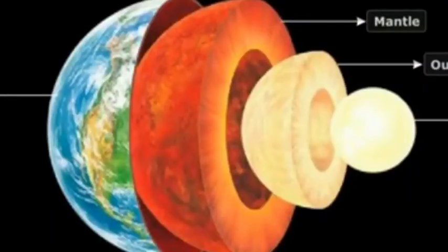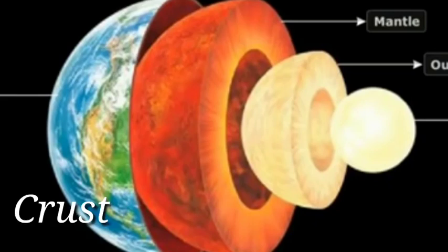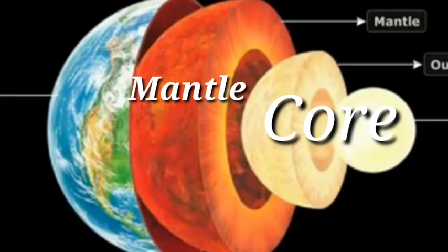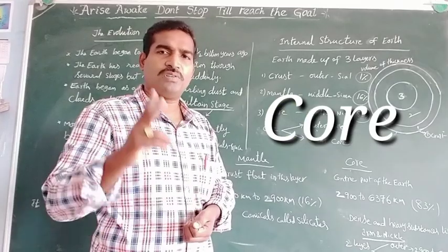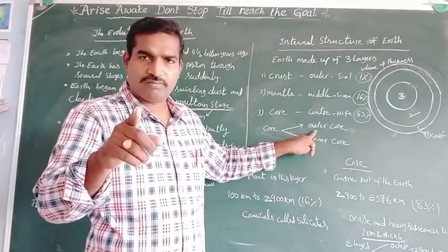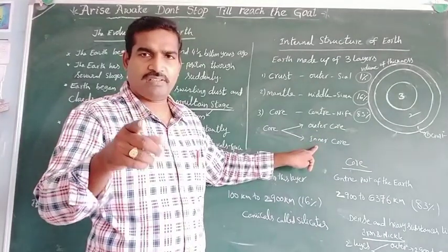Look here — this is our Earth. The Earth has three layers. The first one is the crust, the second one is the mantle, and the third one is the core. The core is further divided into two parts: the outer core and the inner core.